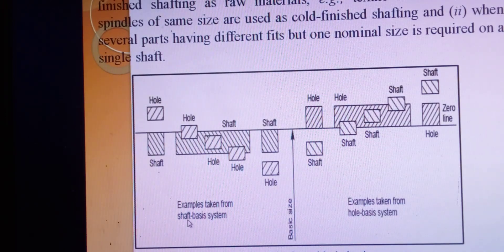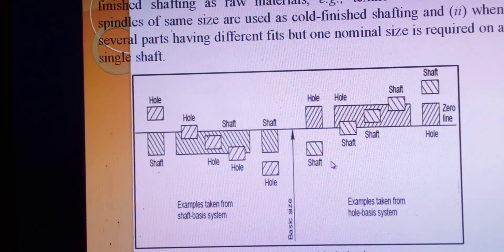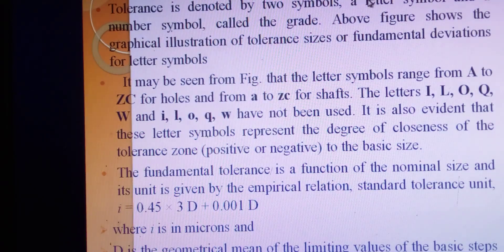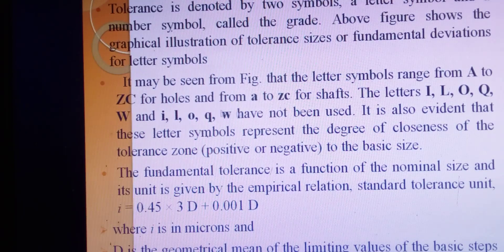To summarize: in the shaft basis system, the shaft is constant and the hole varies; in the hole basis system, the hole is constant and the shaft changes. Next, fundamental tolerance is denoted by two symbols — a letter symbol and a number symbol.